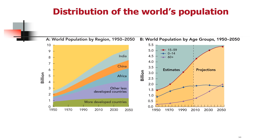Let's take a look at this chart. It shows world population growth and percentages from 1950 to 2050 and the world population by age groups. One of the things you'll note on the chart on the left is that by the year 2050, the majority of the population in the world will reside in India, China, and the continent of Africa.